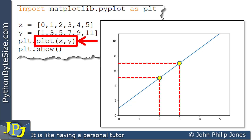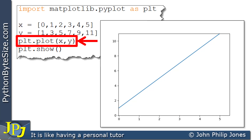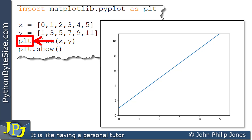It won't draw those dotted lines and yellow dots — that's what I've added for the purpose of this video. But the whole line responsible for plotting the graph is shown here: plt.plot(x, y), passing in x and y which are the lists we've already discussed.